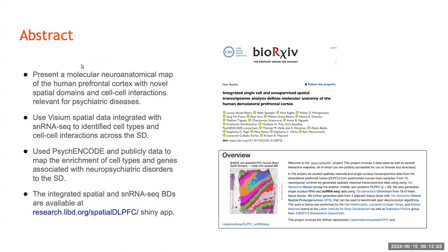Here are the four points that called my attention. First, the authors present a molecular neuroanatomical map of the human prefrontal cortex with novel spatial domains and cell-cell interactions that are relevant for psychiatric diseases. To do this study, the authors used Visium spatial data integrated with single-nucleus RNA-seq data to identify cell types and cell-cell interactions across spatial domains, and also performed integrative analysis using PSYCADE public data to map the enrichment of cell types associated with neuropsychiatric disorders, particularly focusing on schizophrenia.